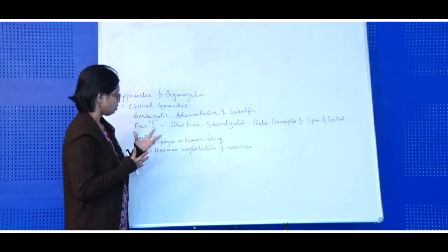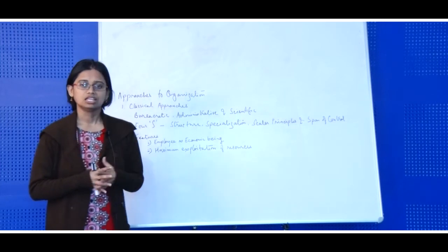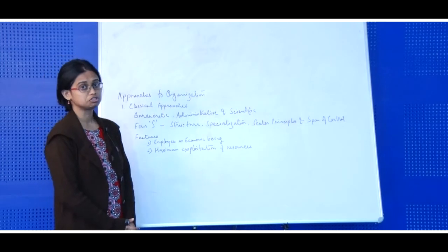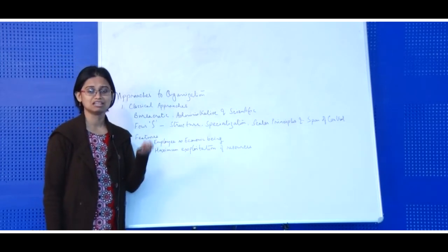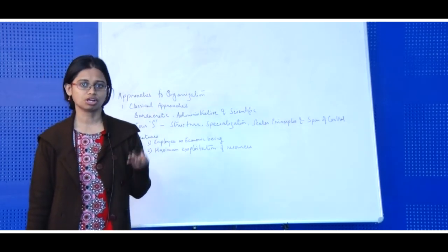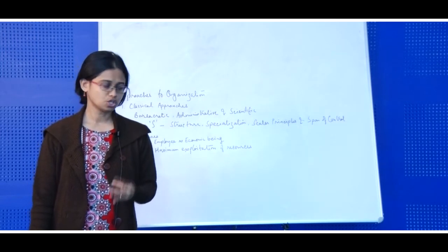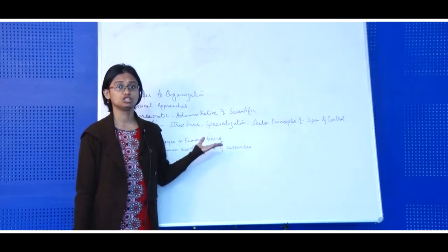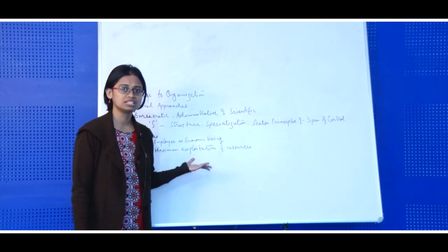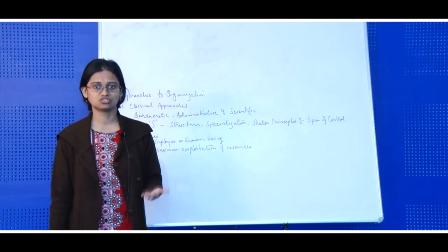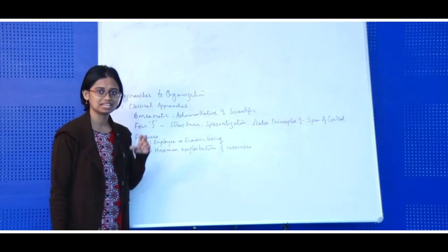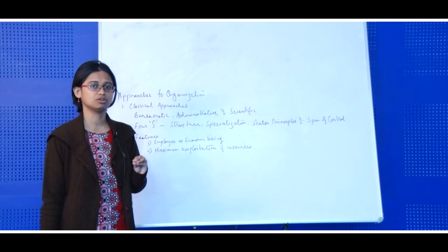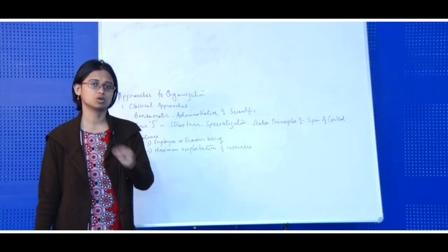Moving to the features of classical approaches: first, employees are treated as economic beings. Employees are treated as part of any other resource, like machines or management structure of the organization. In this case, employees are dehumanized from their work — they are taken as a particular resource like any other resource available to the organization.